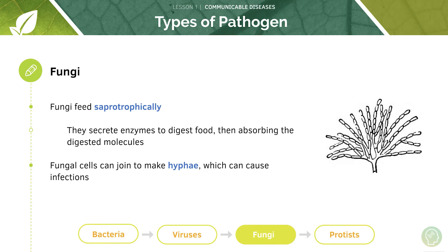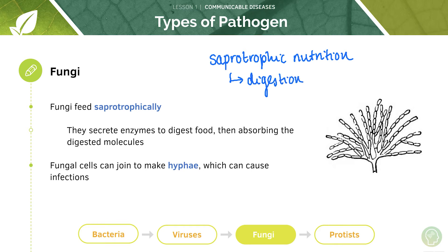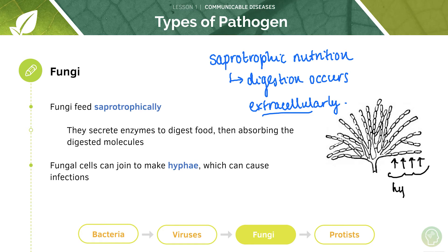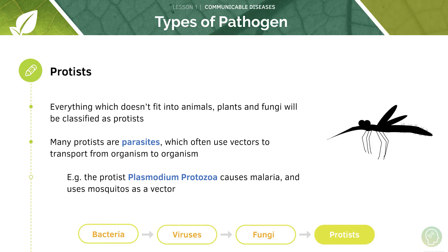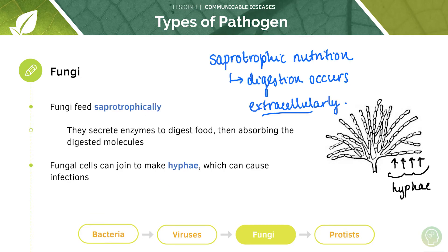Fungi feed saprotrophically, which means they secrete enzymes that digest food extracellularly, and then they absorb this digested food through diffusion. This extracellular digestion is a unique and important feature of fungi. Fungal cells can also join together to make hyphae, which can cause infections. Additionally, fungi can produce spores that come off the ends of the hyphae, and this is how a fungus spreads in the environment.